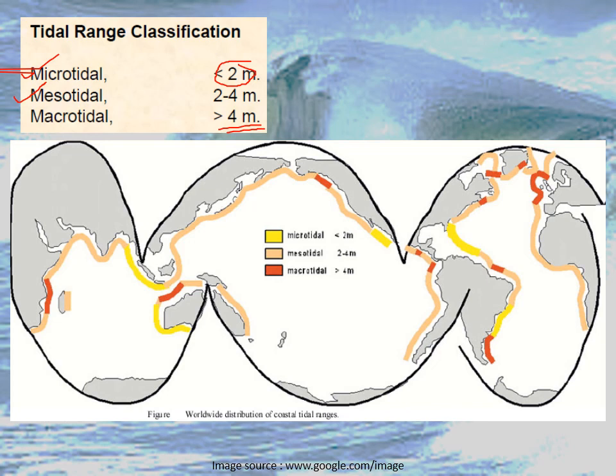If we look at the coastal areas of India, more or less all coastal places of India suffer a mesotidal condition — meaning averagely, all coastal places of India experience a tidal range of between 2 to 4 meters between high tide and low tide.